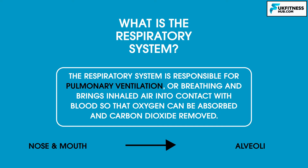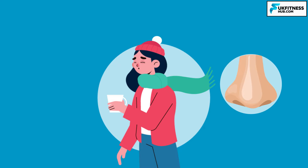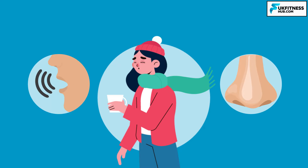The respiratory system can perform other functions as well as gaseous exchange. The act of exhaling air also removes some water and heat from the body — the water can be seen when we exhale on a cold day. The respiratory system also has to filter, warm, and moisten air as it goes from a cold, dirty, dry external environment into a warm, clean, moist internal environment. It also provides a sense of smell and allows us to produce sounds.